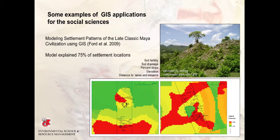GIS can be used to predict settlement locations to guide archaeological surveys. Shown here is a GIS model of settlement patterns of the late classic Maya civilization using soil fertility, drainage, percent slope, elevation, and distance to lakes and streams as inputs. The model was validated by adding unsurveyed sites with a global positioning system, or GPS, along belt transects. The model performed remarkably well and explained 75 percent of the settlement locations.